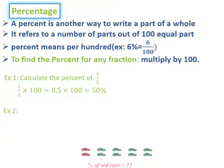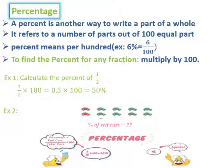Example 2: We are going to calculate the percentage of red cars. Here we have 10 cars. Two of them are red. So, 2 out of 10 are red. In order to calculate the percentage, we multiply 2 over 10 by 100. Then, the answer is equal to 20%.